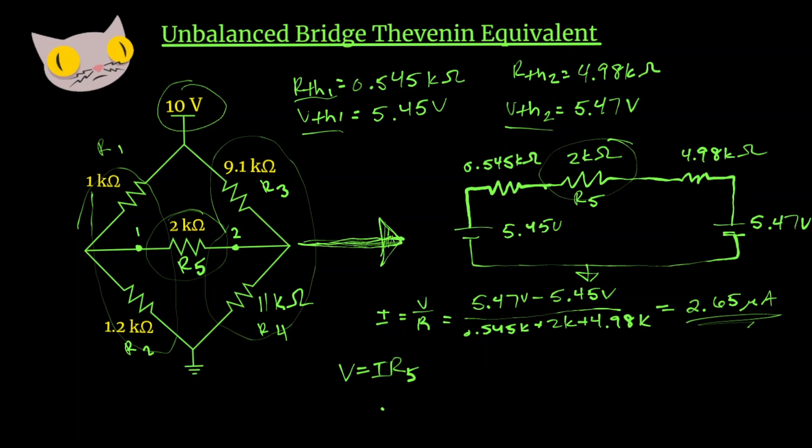Now let's solve for the voltage through R5. So we have our current, that's 2.65 microamps, so it's going to be 10 to the negative 6 amps times R5, 2000 ohms. And that's going to give us about 5.3 millivolts.